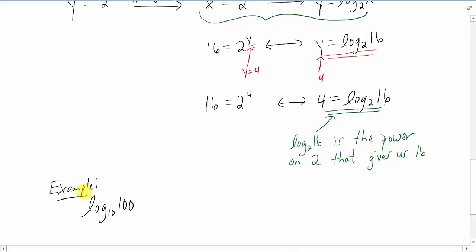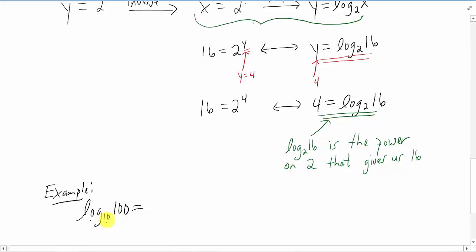And that is 4. So as a quick example, what would the log base 10 of 100 be? It's the power on 10 that would give us 100. So 10 to what power is 100? Think about it for a while, and the answer is going to be 2.